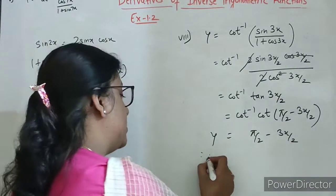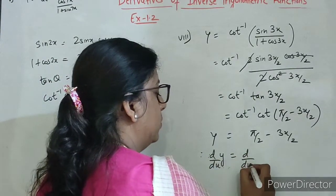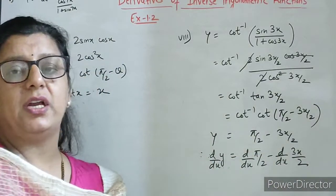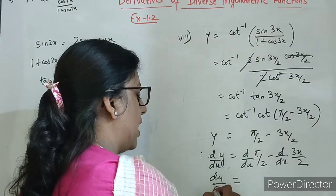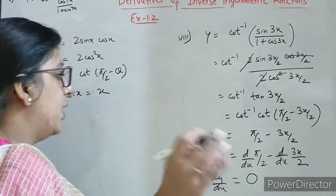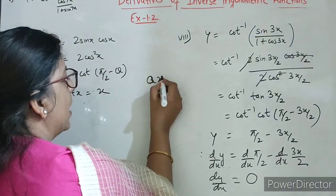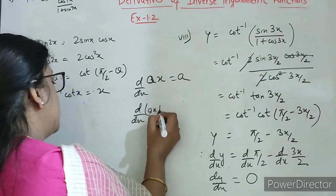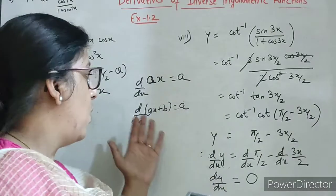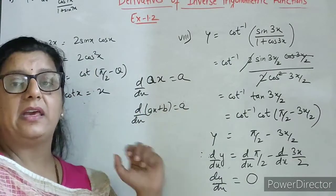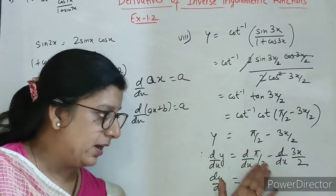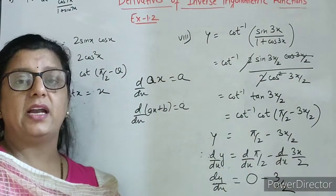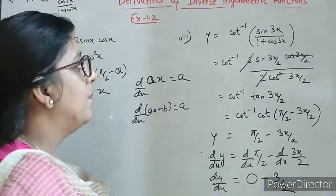Y ho gaya simplified form mein. Now differentiating with respect to x. Students, yaad rakhna hai: mostly inverse wale mein first simplify the question and then differentiate. So dy by dx kya ho jayega? Pi by 2 toh constant hai, derivative 0. And derivative of 3x by 2 — shortcut: derivative of ax is a, so coefficient of x is 3 by 2. Answer is minus 3 by 2.